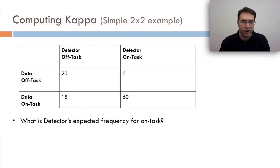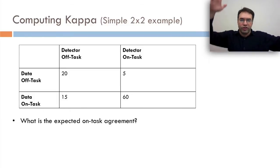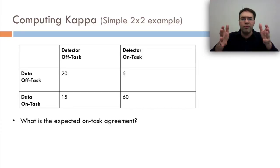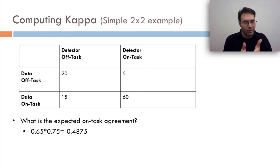What's the detector's expected frequency for on task? Well, look at the detector on task column. 60 plus 5 is 65 or 65%. What's the expected on task agreement? If we take the two cases and say, what's the data's percentage of on task, what's the detector's percentage of on task, and we say there's actually no correlation between the detector and the data, we're just going to have people be on task according to the detector or the data by complete chance according to the proportion, 75% and 65%. In that case, the expected on task agreement is 65% times 75%, which is 48.75%.